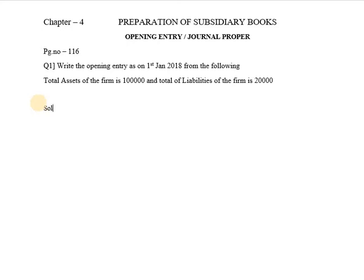So when total assets and total liabilities of the firm are given, we will be finding capital. The formula for calculating capital is: Capital equals Total Assets minus Total Liabilities. Assets are the resources which a business organization owns.